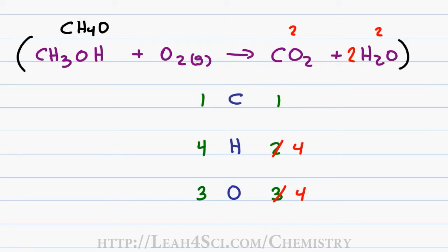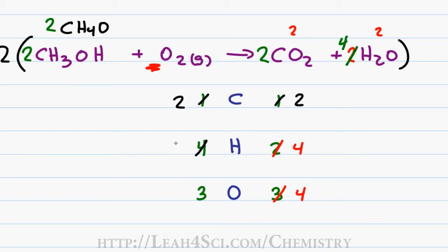I'll place parentheses around the entire reaction and place a 2, but to avoid confusion let's distribute that 2 on everything except for oxygen. So we'll start by doubling the methanol, doubling the carbon dioxide, and then doubling the water. 2 methanol means I have 2 carbons on the left; 2 CO2 gives me 2 carbons on the right. Doubling the hydrogen gives me 2×H4 for a total of 8. I'll ignore the oxygens for now — I want that to be the last thing I balance.